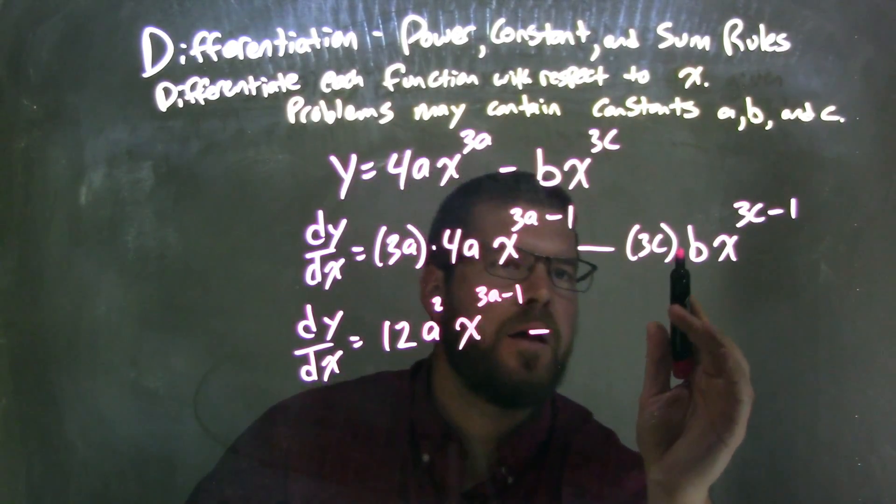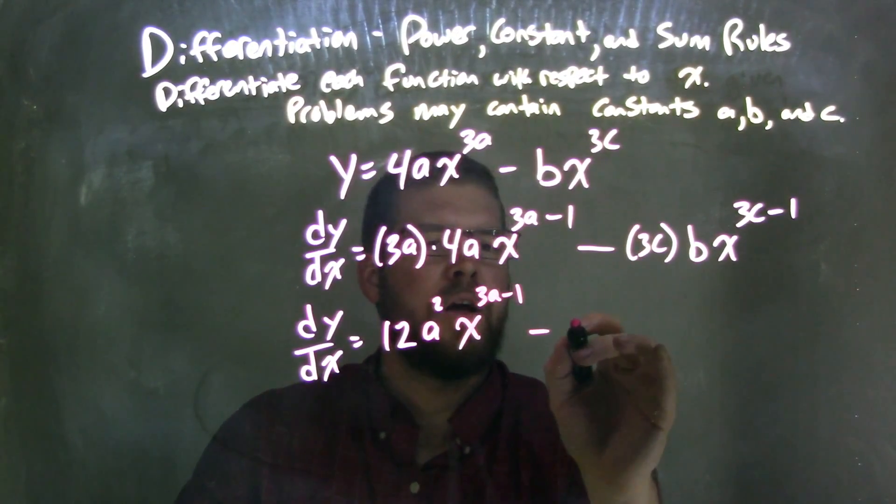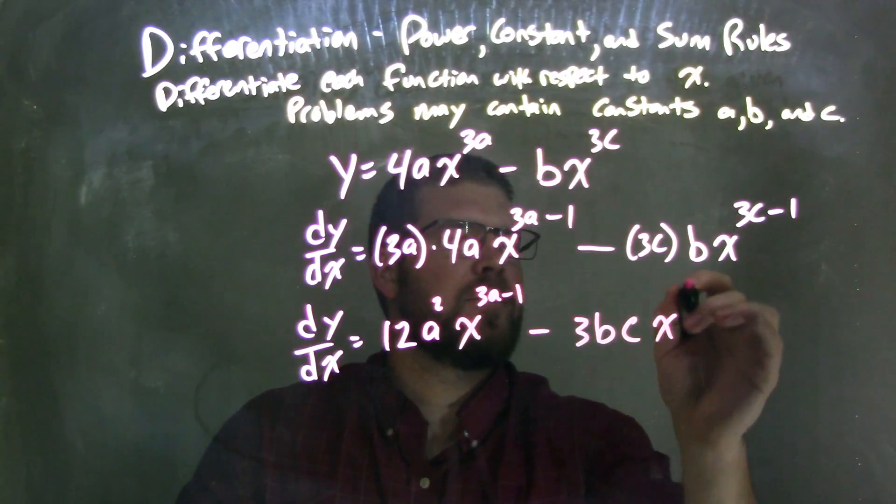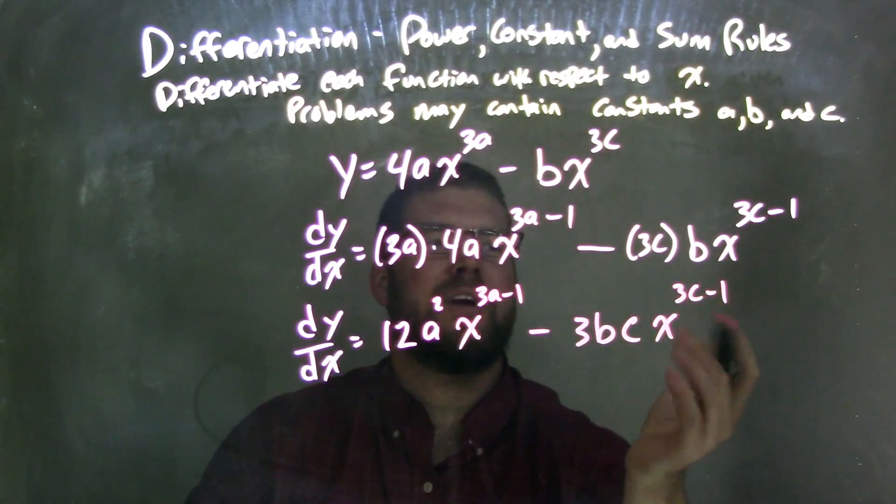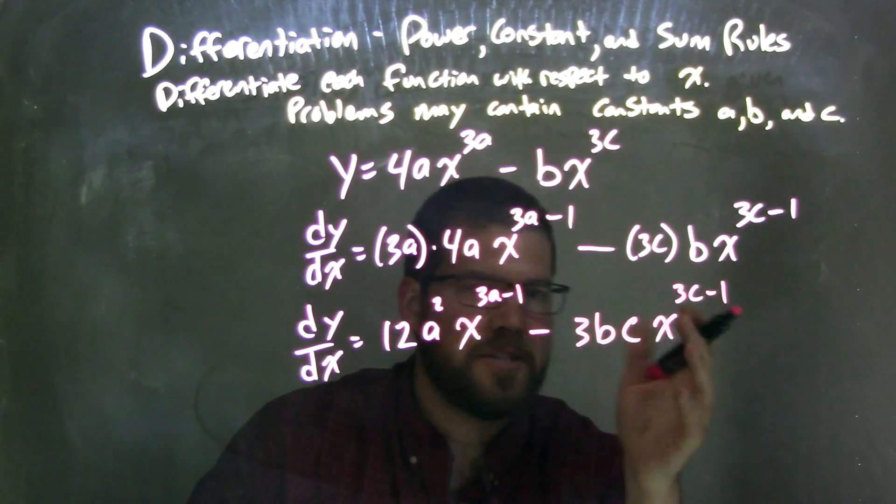Now the right side here. Well, 3 times c times b, let's go in alphabetical order, it's called 3bc. 3bc x to our exponent now of 3c minus 1. Again, we can't subtract 1 from 3c because we don't know what c is, that constant.